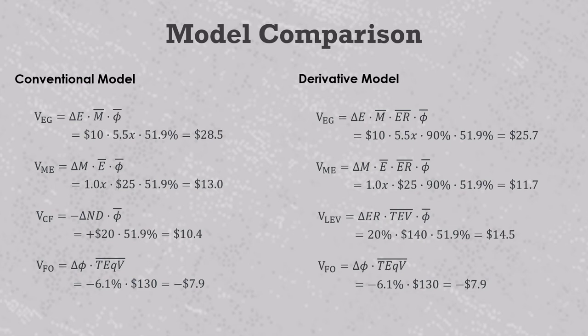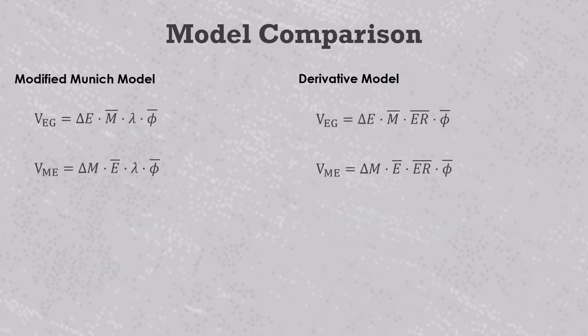One more thing worth noting here is how the derivative model's EBITDA growth and multiple expansion formulas compare to the Munich model of value creation described in VC103. We see here that they're almost identical, but we replace lambda with the average holding period equity ratio. This is significant because that lambda term can be quite complicated. It required inputs like interest rates and tax rates that you might not have access to, and it could also be quite volatile in scenarios where there's high leverage or large changes in net debt. The average equity ratio does not have the volatility problem, and it's much easier to calculate, which makes it a much better option.